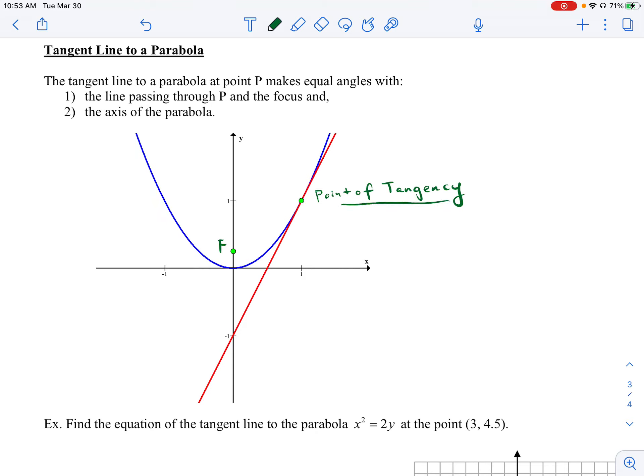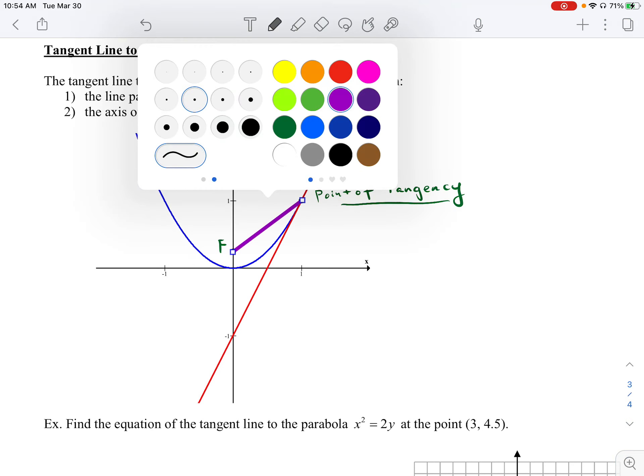With parabolas, what's unique about the tangent line is that the distance from that point of tangency to the focus. Let me go ahead and draw that. The distance from the point of tangency to the focus, and if we were to call that distance d1.